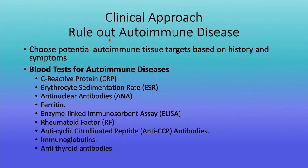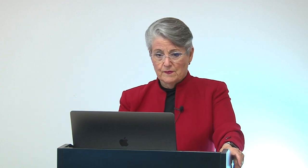For the clinical approach to ruling out autoimmune disease, choose potential autoimmune tissue targets based on history and symptoms. Blood tests include C-reactive protein, sed rate, antinuclear antibodies, ferritin, ELISA testing, rheumatoid factor, anti-CCP antibodies, immunoglobulins, and antithyroid antibodies. If the patient has antithyroid antibodies, they can't convert T4 — the storage form — into T3, the active form. If all you measure is TSH and T4, you don't know anything. If the thyroglobulin is coated with antibodies, the enzyme that converts T4 to T3 doesn't work.